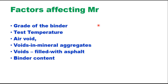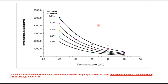Resilient modulus changes with temperature and bitumen content. When you increase bitumen content, MR value reduces. Similarly, when you increase the test temperature, MR value will again decrease.